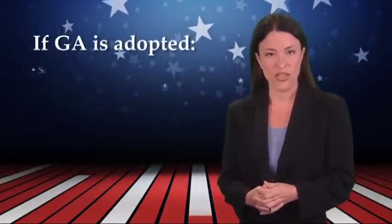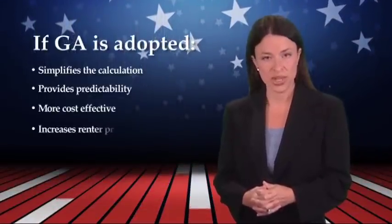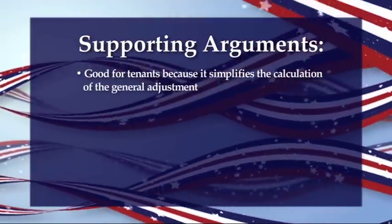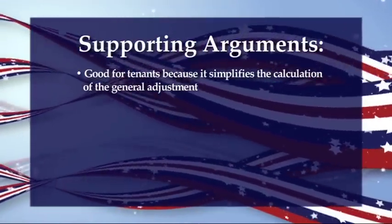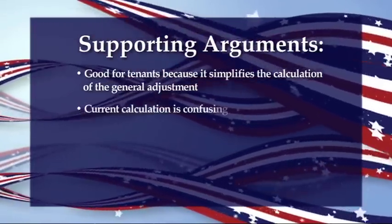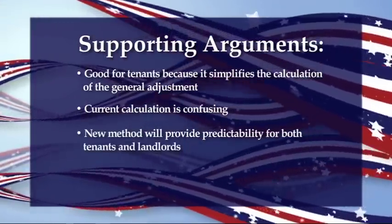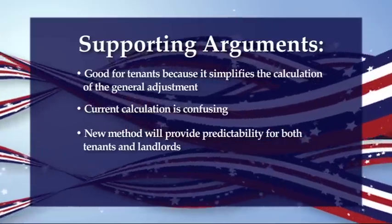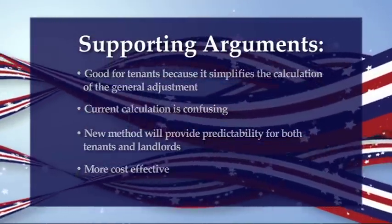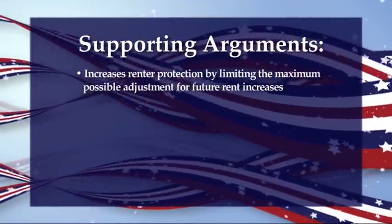Supporters say the new method simplifies the calculation, provides predictability, is cost-effective, and increases renters' protection. Those in favor say that Measure G-A is good for tenants because it simplifies the calculation of the general adjustment. They say the current calculation is confusing. The new method, which would use the Consumer Price Index, will provide predictability for both tenants and landlords, and it will also be cost-effective. Supporters also say the measure will increase protections for renters by limiting the maximum possible adjustment for future rent increases.